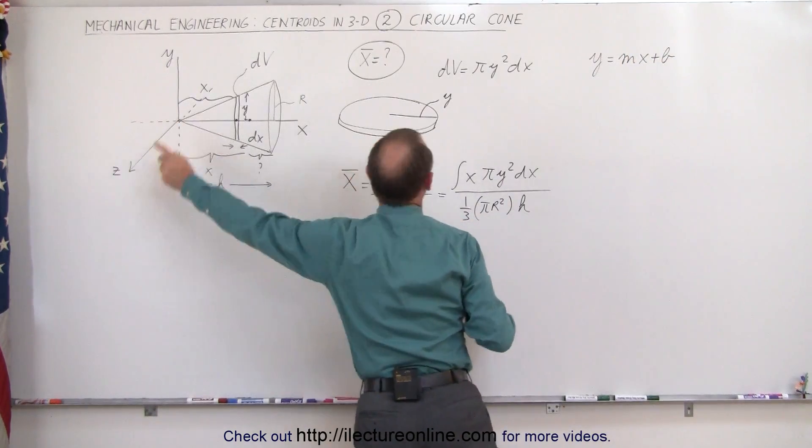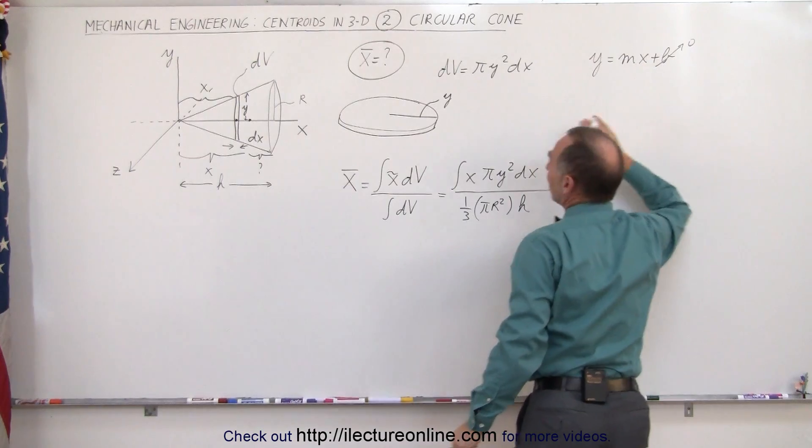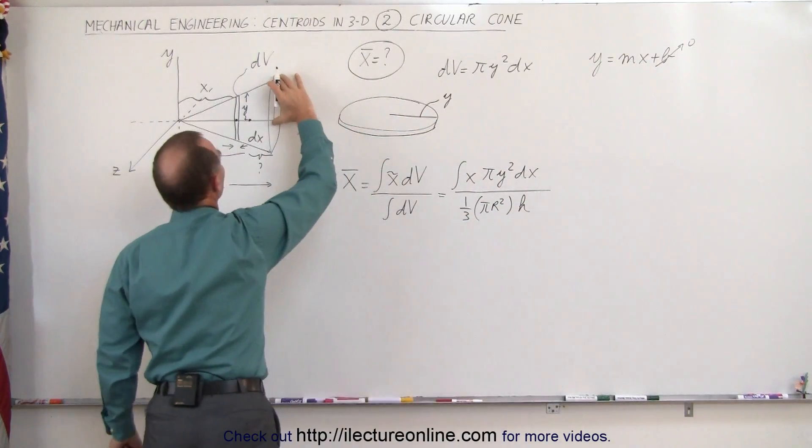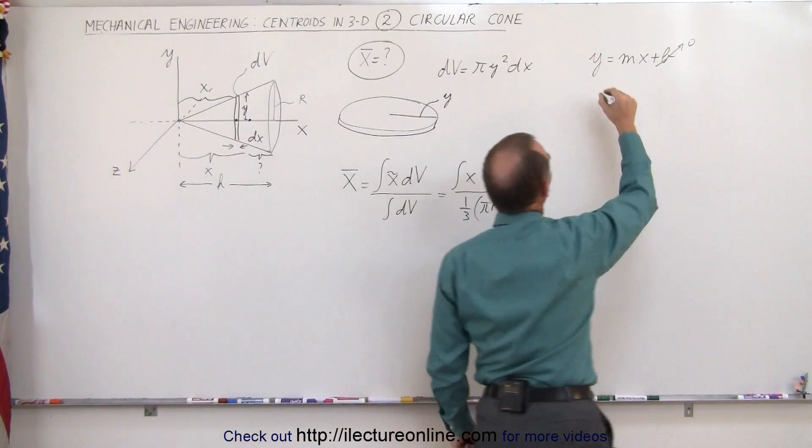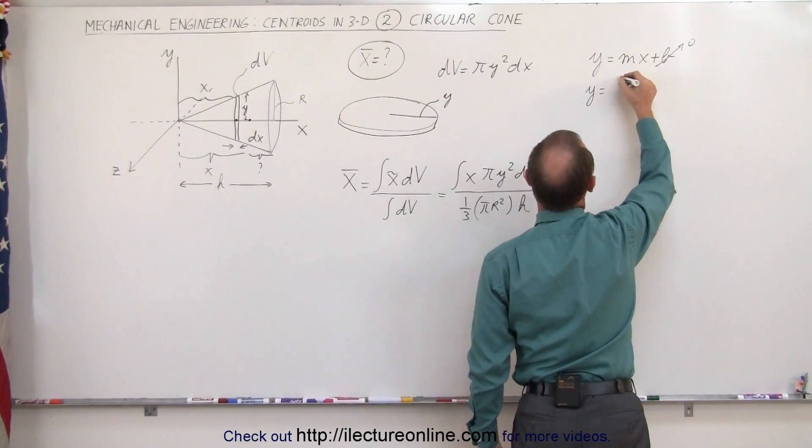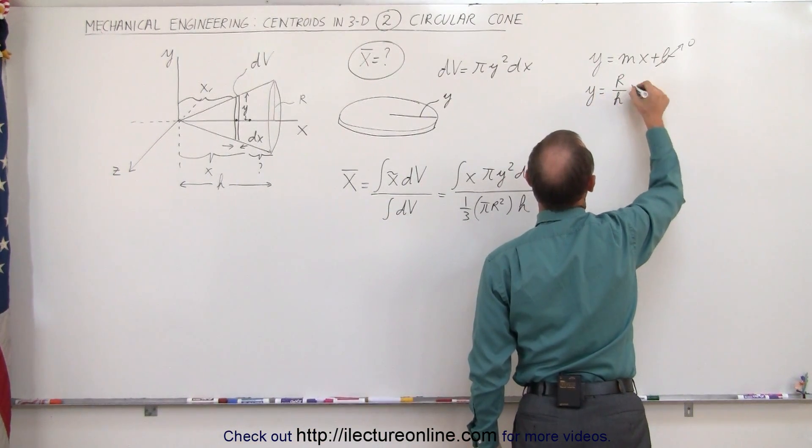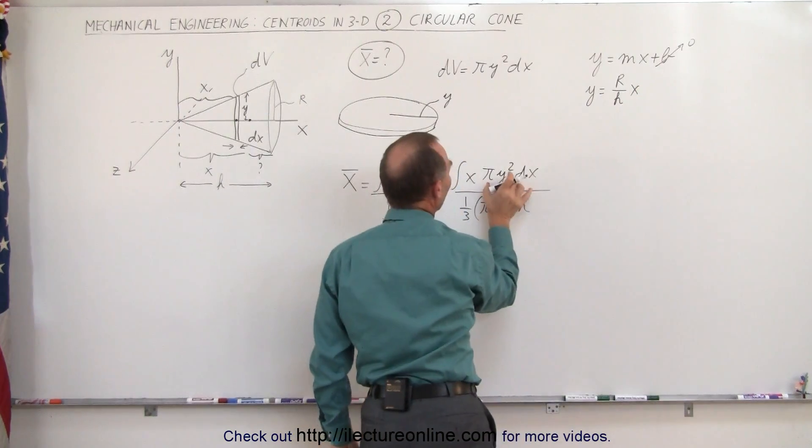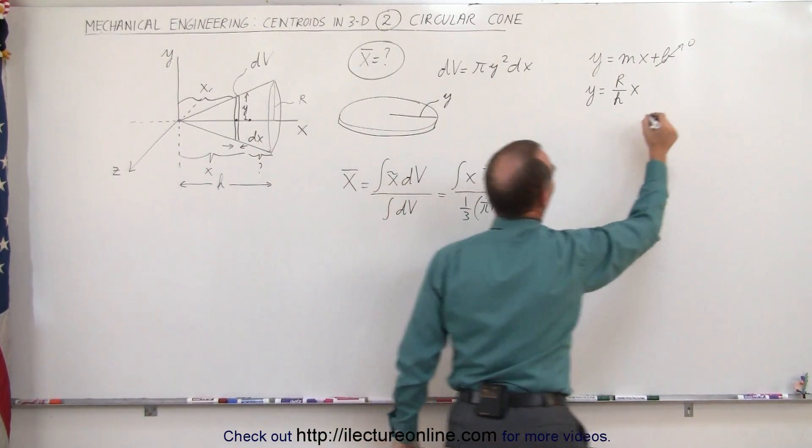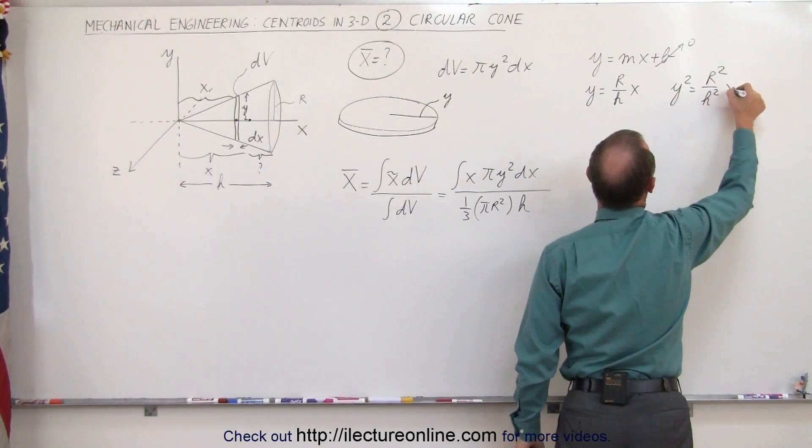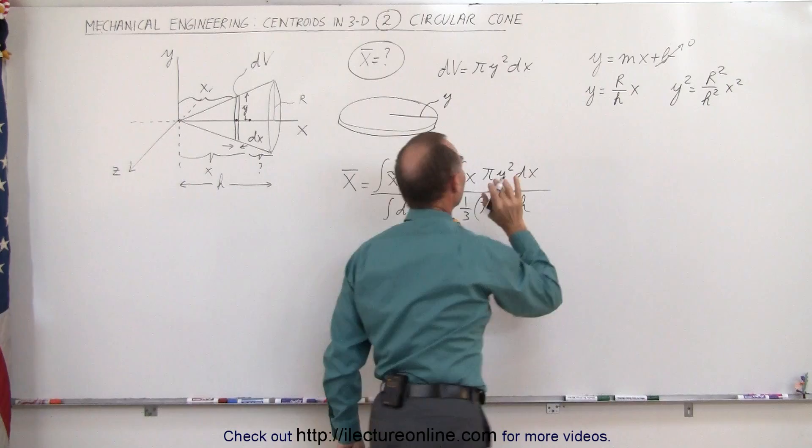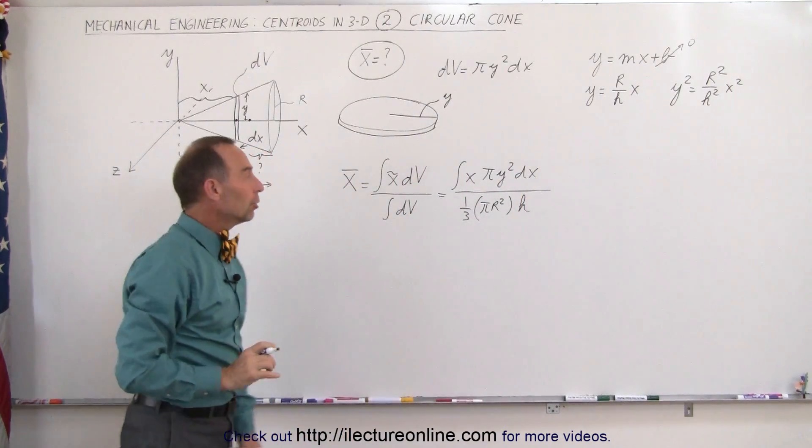Now in this case, since the tip is right at the origin, our b will be zero and the slope will be the rise over the run, the rise will be the radius of the base r and the run will be h. Therefore we can write y equals rise r over the run h times x and we can replace y² by this quantity squared. So y² is equal to r² over h² times x² and that will go right in here in the integral in the numerator.